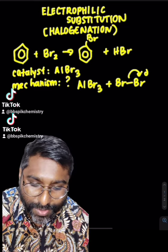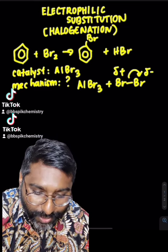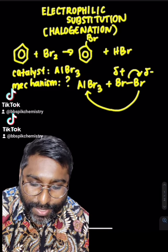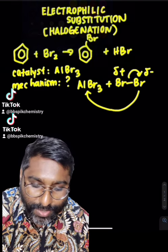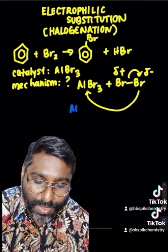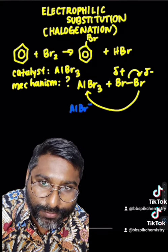AlBr3 plus Br2, where AlBr3 is going to polarize the bromine molecule and you are going to get AlBr4 minus and the electrophile.